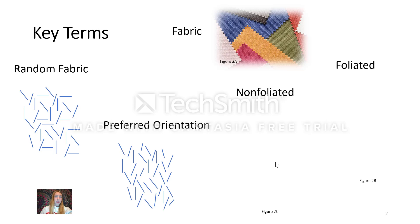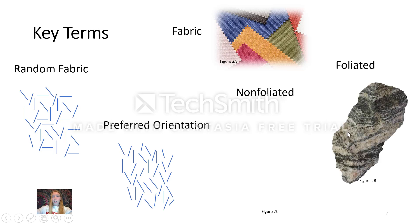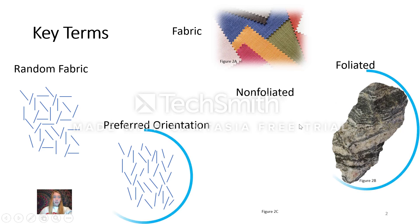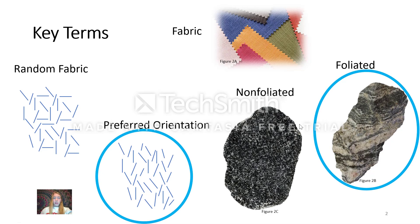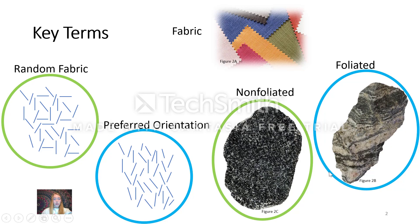The two big categories of metamorphic rocks are foliated and non-foliated. Foliated means that the rock has preferred orientation, which is physically evident in the planar texture. Non-foliated rocks maintain the original random fabric, which is common in parent materials of igneous or sedimentary rocks. Even though they have been altered, because they were under confining pressure or formed differently, they did not experience direct pressure and therefore have random fabric, not preferred orientation.